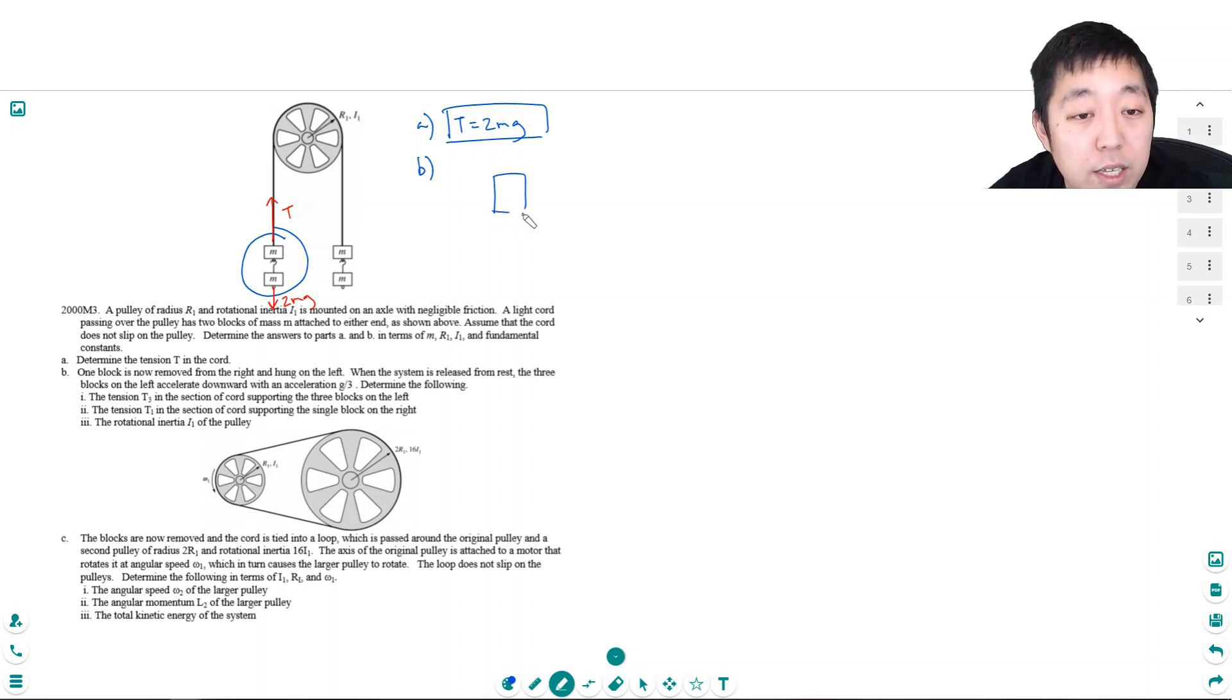So the three blocks on the left look like this. I'm just going to put them all together. They have 3mg going down and they have T3 pulling up because T3 is a section of cord. But it's going to accelerate downward at A equals G over 3. So the net force on this downward is 3mg minus T3. That's equal to Mg. So T3 is equal to 3mg minus mg. That's equal to 2mg. So T3 is equal to that.